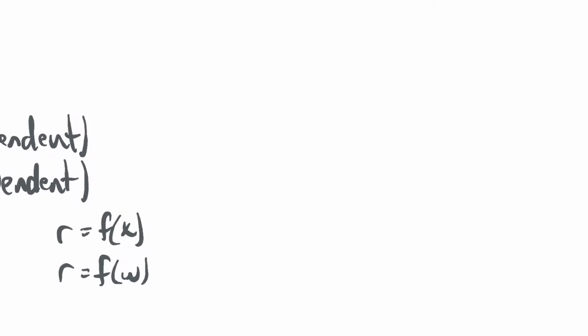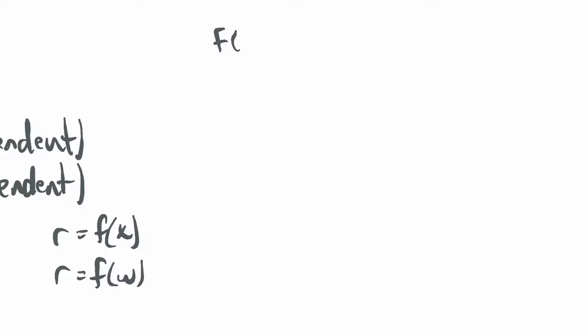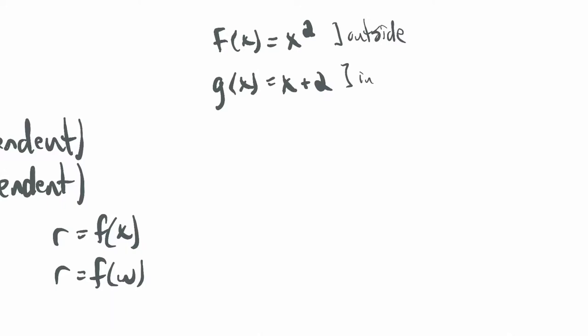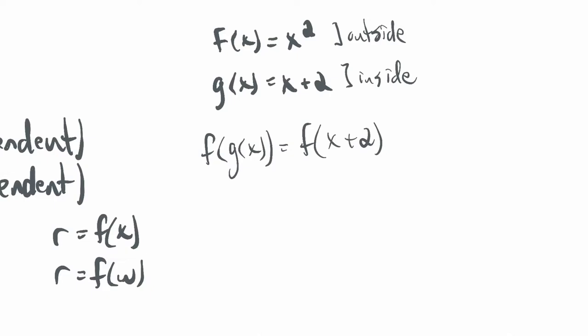Let me remind you how composite functions are written. Say we have f of x equals x squared and g of x equals x plus 2. I'll call f the outside function and g the inside function. I'm going to plug g into f, so f of g of x is f of whatever g of x is — x plus 2 in this case.